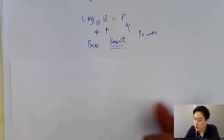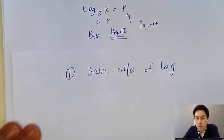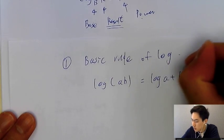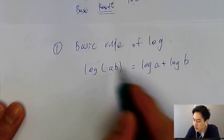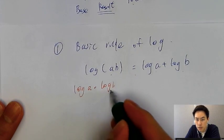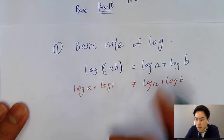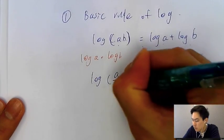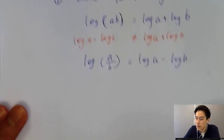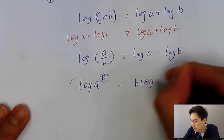Knowing BRP is not enough for the exam. The first question type is the basic rules of log — there are three rules you must memorize; they're not in your data booklet. Rule 1: log(A×B) = log A + log B. Note: log A × log B does NOT equal log A + log B — only when A and B are inside one bracket multiplied together. Rule 2: log(A/B) = log A − log B. Rule 3: log(A^B) = B·log A — the power moves to the front.